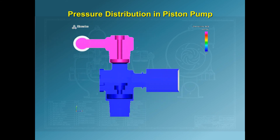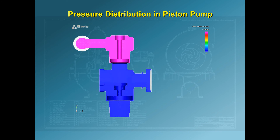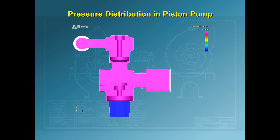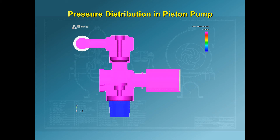Here is the pressure distribution in the pump. Notice the flashes that occur when one of the valves opens or closes. This occurs because high pressure waves are generated and propagate through the system when the valves close. This is a water hammer effect.